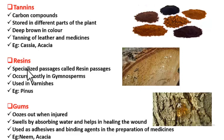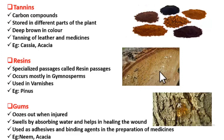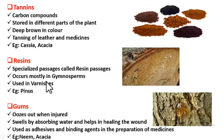Next are resins. Resins are oily substances present in special tubes called resin passages, commonly seen in gymnosperms. If you take a cross section of a gymnospermic stem or leaf, you find resin oozing out. These resins are used as varnishes — liquids applied to wood to make it shiny and protect it from pests. An example is Pinus.